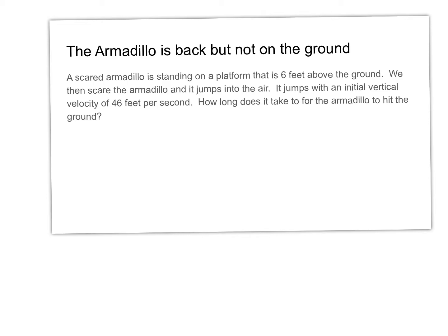This time we're going to scare an armadillo, but this time he's not going to be on the ground. A scared armadillo is standing on a platform that is six feet above the ground. We then scare the armadillo, and it jumps into the air with an initial vertical velocity of 46 feet per second. How long does it take the armadillo to hit the ground?